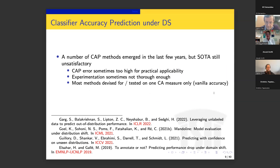Recently, several classifier accuracy prediction methods have emerged in the literature in the last five years. One problem is that the state of the art is still unsatisfactory for three reasons: the error these methods produce is sometimes too high for practical use; the experimentation in published papers is not thorough enough; and most methods deal with only one classifier accuracy measure — typically vanilla accuracy. We sat down to do research to improve on all three of these problems.